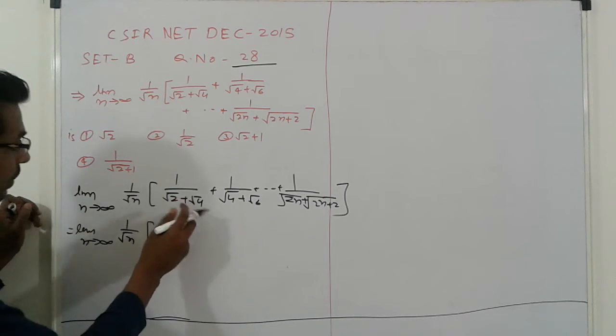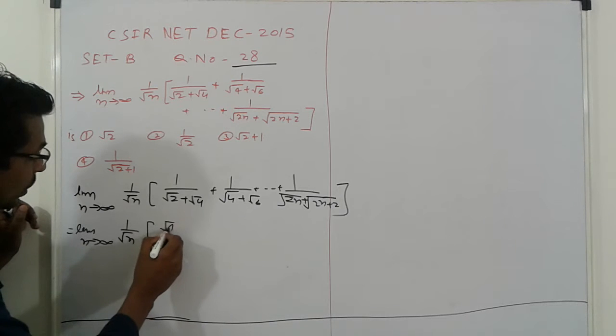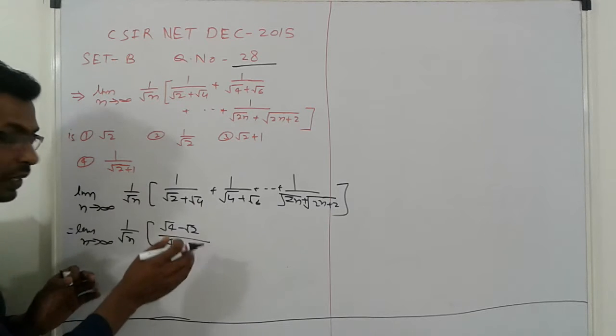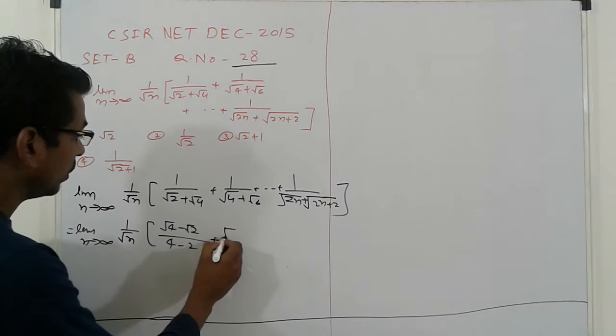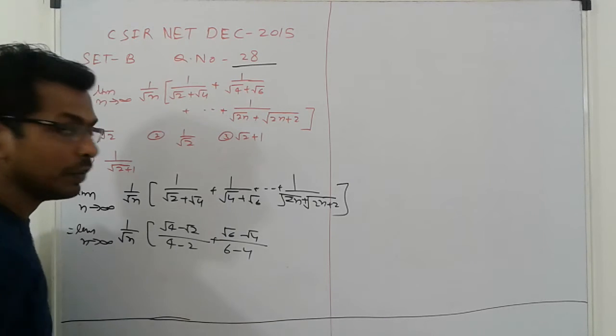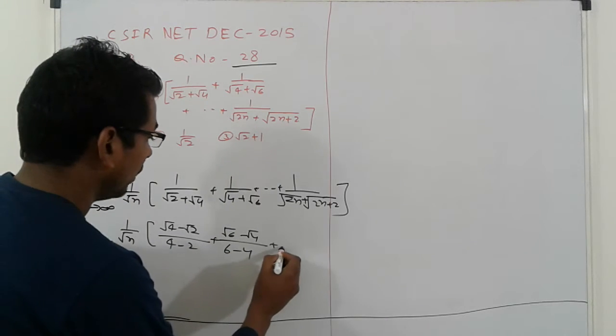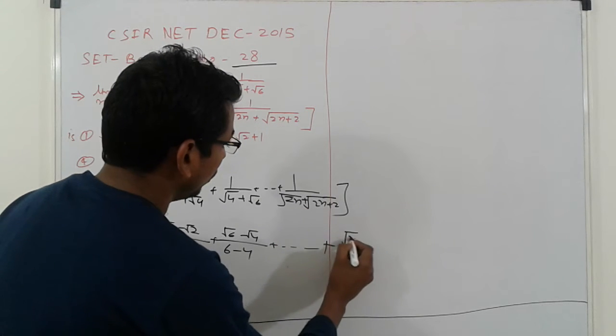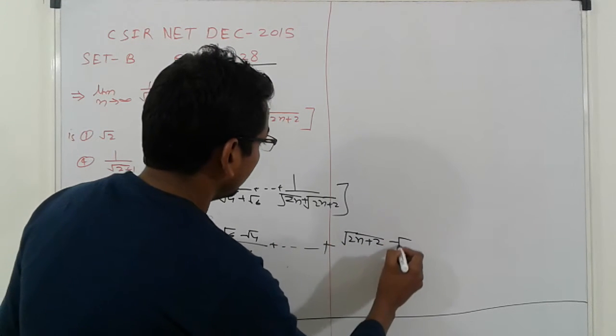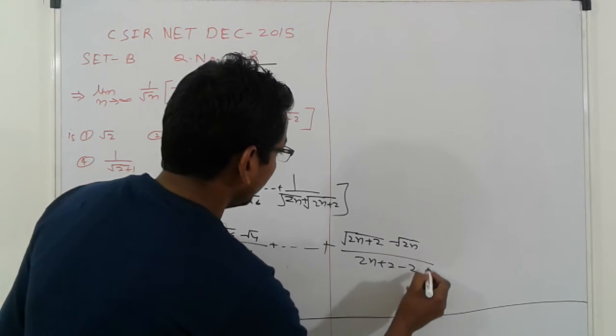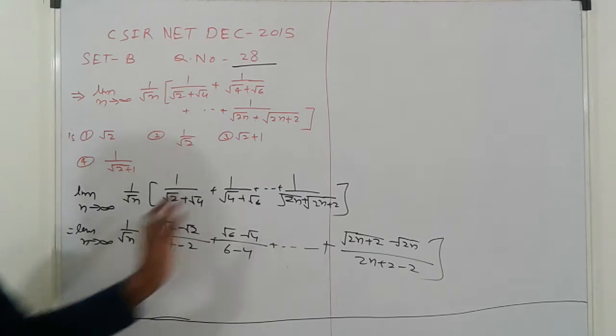So get limit n tending to infinity 1 by root n. And it can be the multiply that is here under root 4 minus root 2. That is denominator 4 minus 2. That is the adjustment plus here under root 6 minus under root 4 divided by 6 minus 4 and up to something plus. That is here. So root 2n plus 2 minus under root 2n divided by 2n plus 2 minus 2.